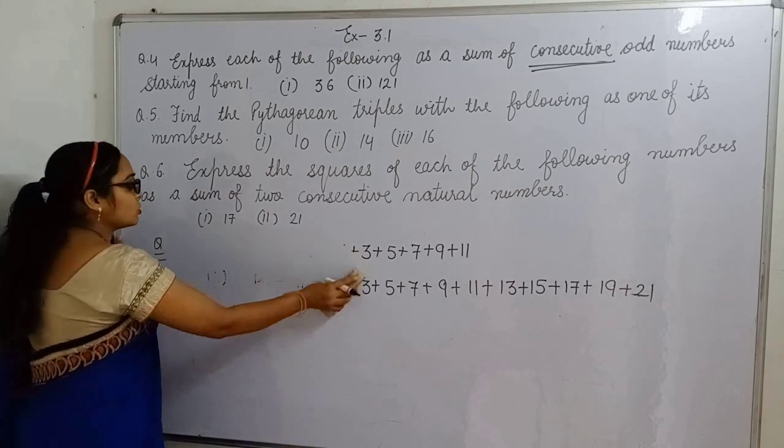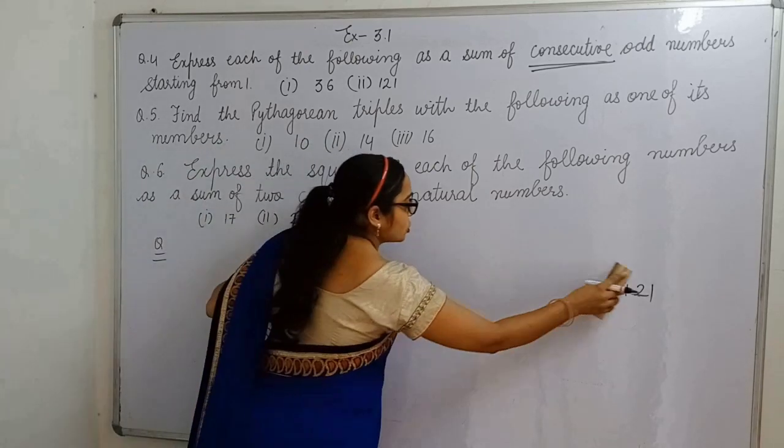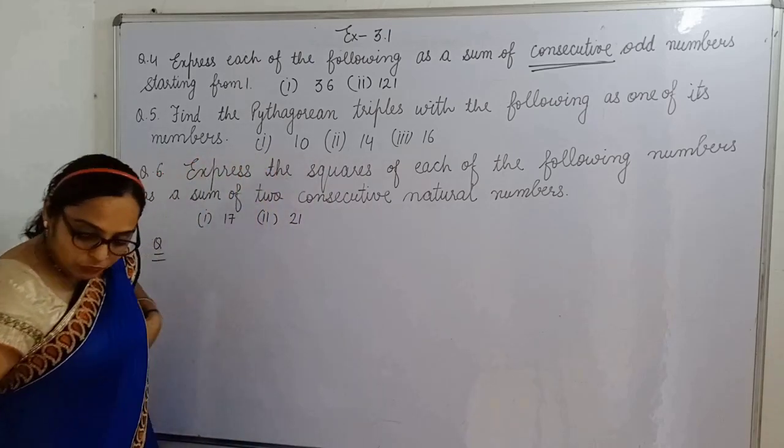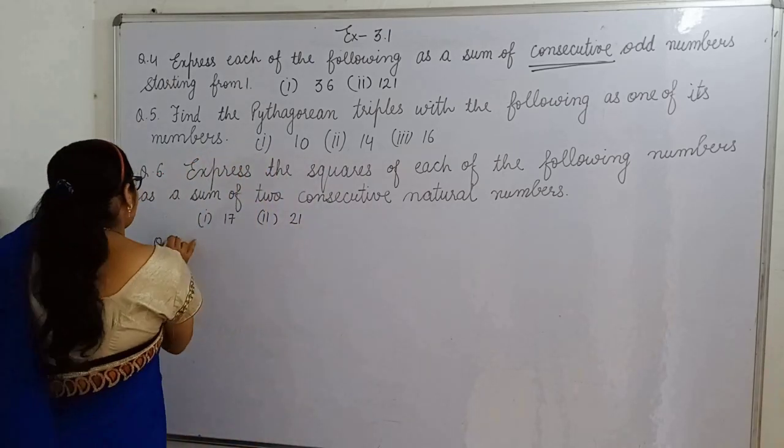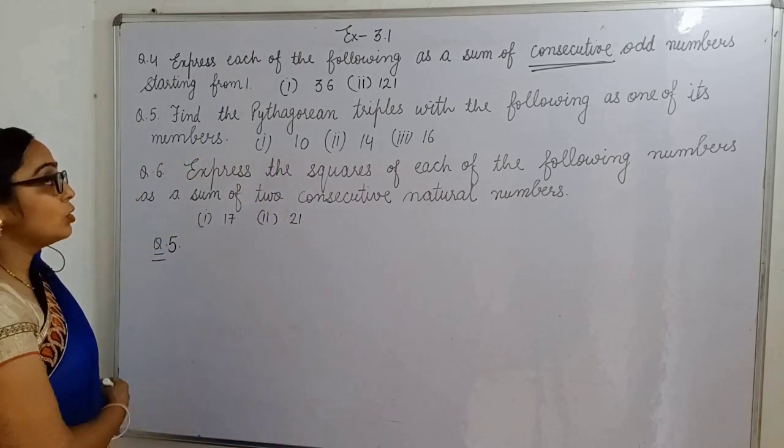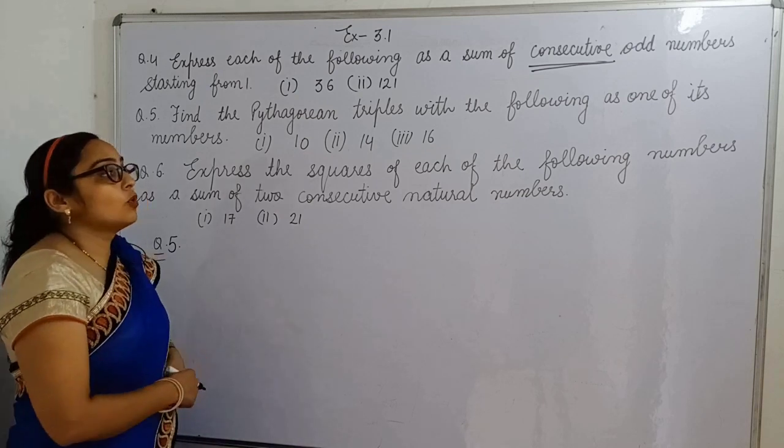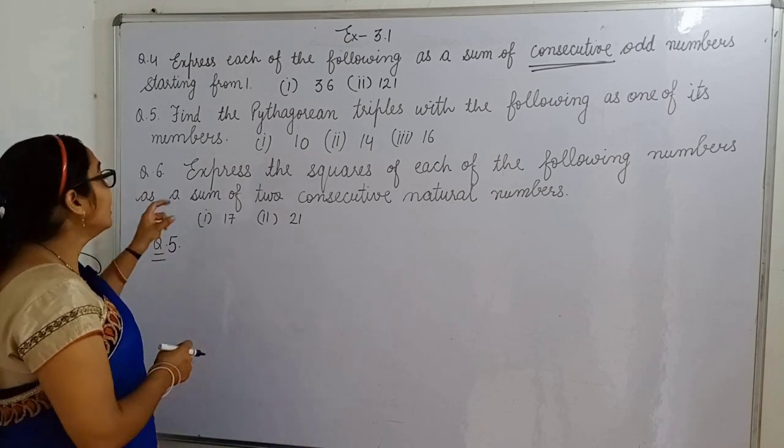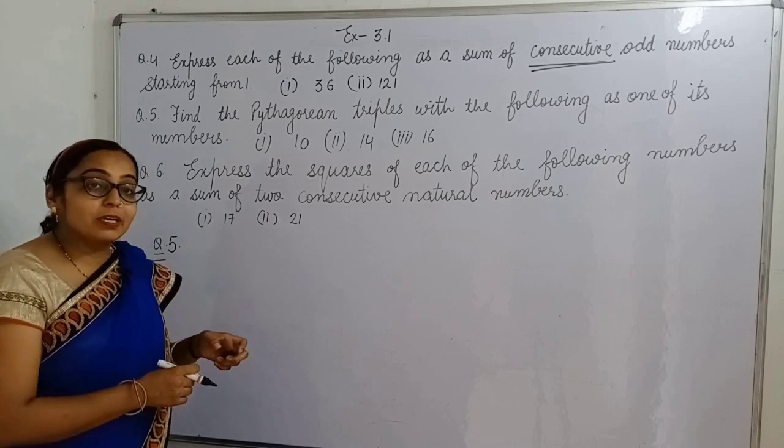Now, let's move to the next question, that is our fifth question. What is our fifth question? Find the Pythagorean triplet with the following as one of its members. So, what is Pythagorean triplet?